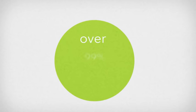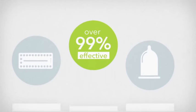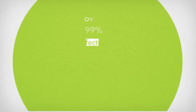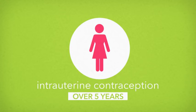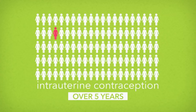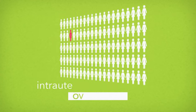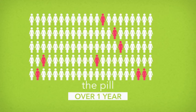It is over 99% effective, more effective than pills or condoms at preventing pregnancy. Over 5 years, less than 1 in 100 women using intrauterine contraception will become pregnant, compared to 8 in 100 women who will become pregnant over 1 year of using the pill.